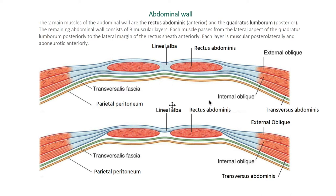Each layer is muscular posteriorly and aponeurotic anteriorly. On the posterior side, these three muscles are muscular, but on the anterior side they become aponeurotic — they transform into an aponeurosis before attaching to the rectus abdominis muscle.